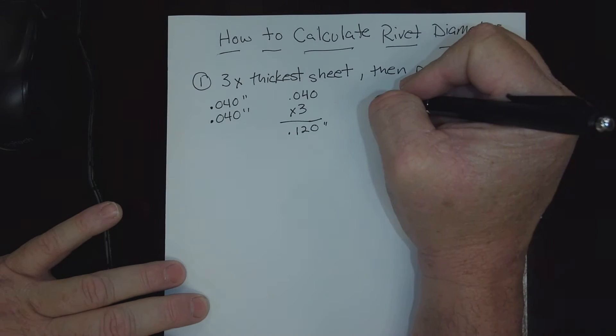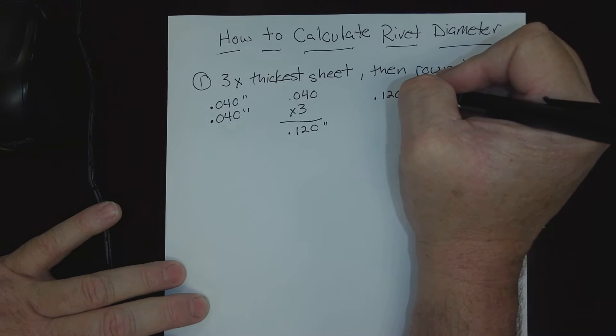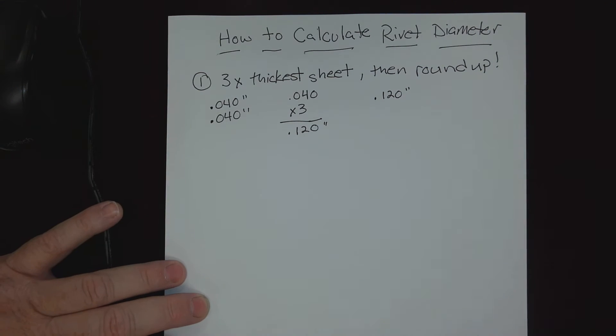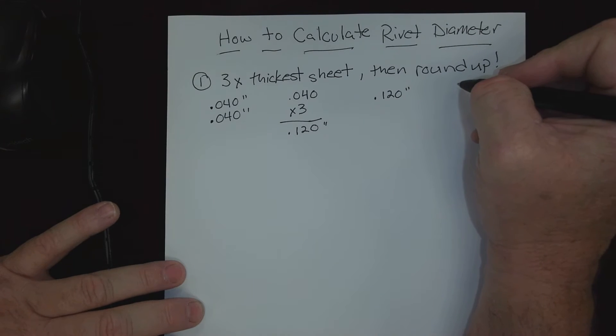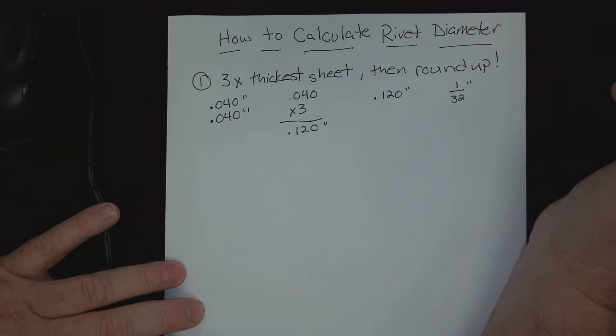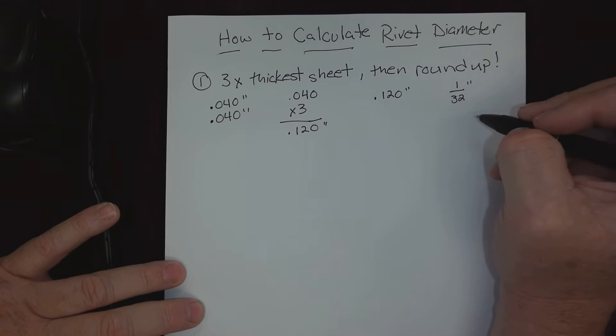Now let's look at the second part. If we have one hundred and twenty thousandths of an inch, that gives us a good guide, but what we would have to know is our rivet sizes in order to round up. Well, from a previous video, I told you that all rivet diameters are in one thirty-seconds of an inch.